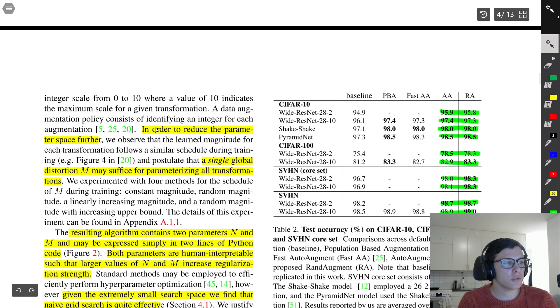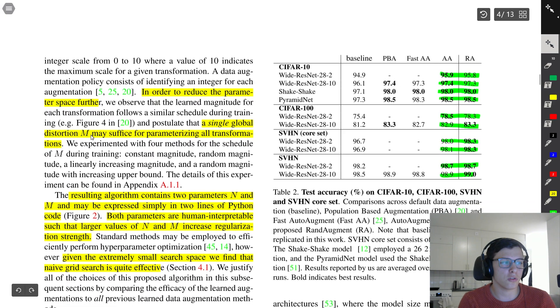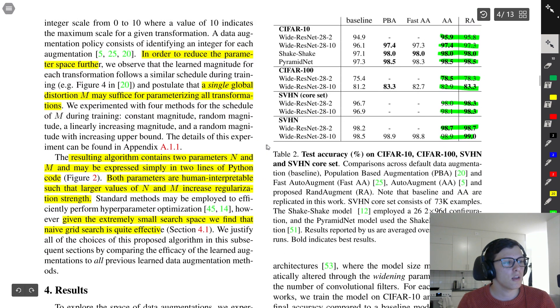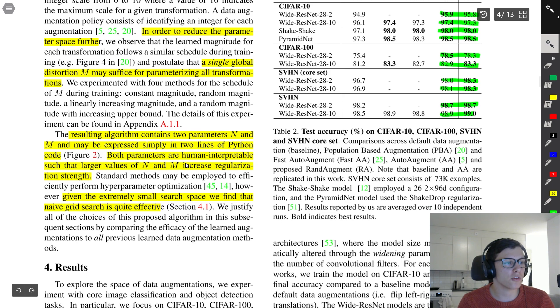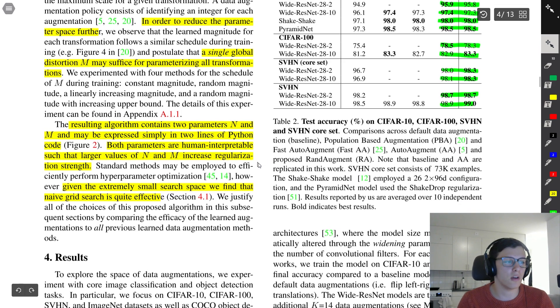They go on to say that in order to reduce the parameter space further, they have a single global distortion m that may suffice for parameterizing all transformations. The resulting algorithm just contains two parameters n and m and can be expressed in two lines of Python code. They also mention that both parameters are human interpretable such that larger values of n and m increase the regularization strength, which is pretty nice to have that intuitive understanding.